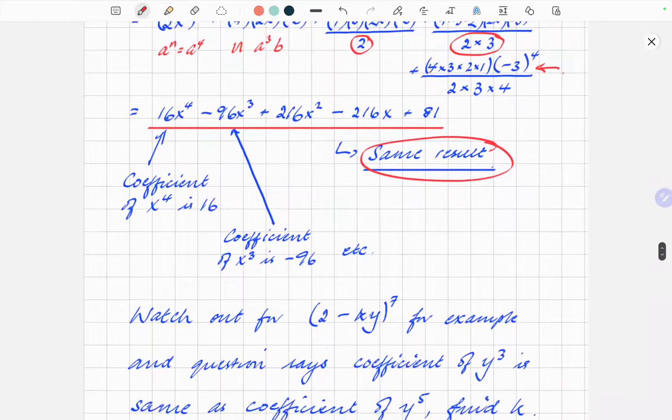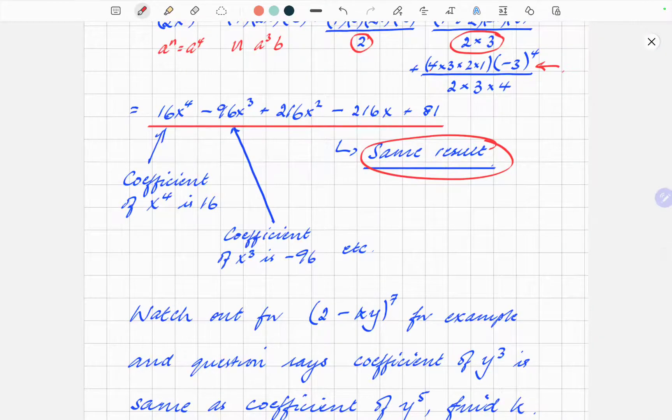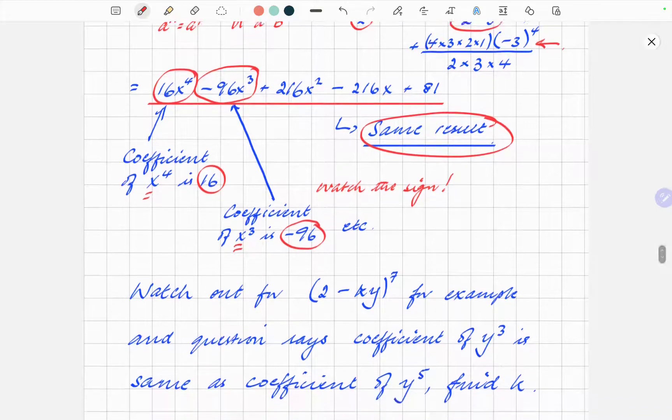One final thing for the types of questions. Remember that all of these, the important part of it is actually the coefficients. For example the coefficient of the 16x to the power 4 is actually 16. The coefficient does not include the x to the power 4, it is just the 16, the number in front. And again watch the sign. The coefficient of the x cubed is minus 96, and so on. So watch out for that.